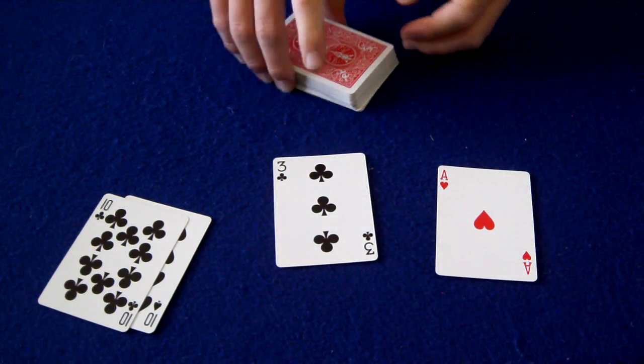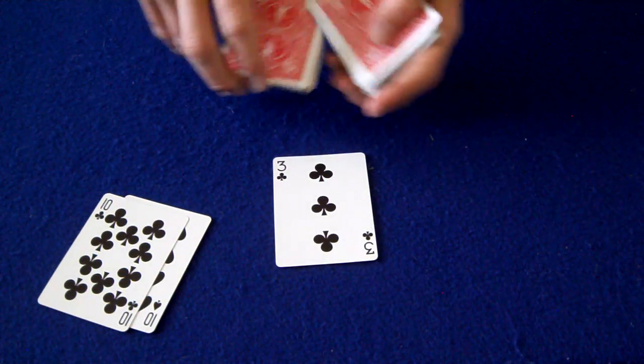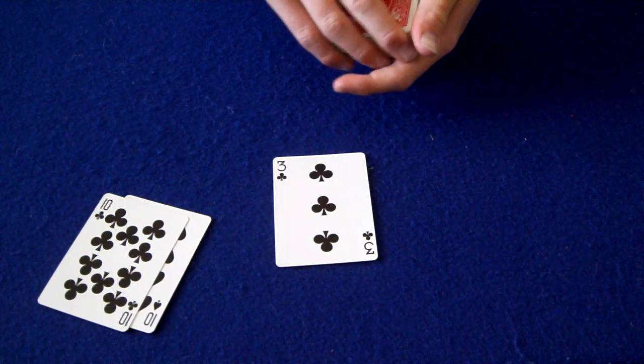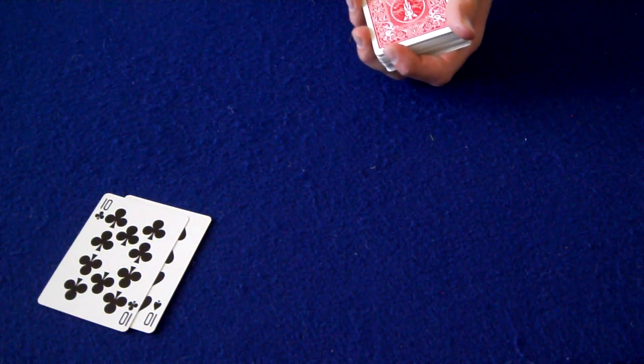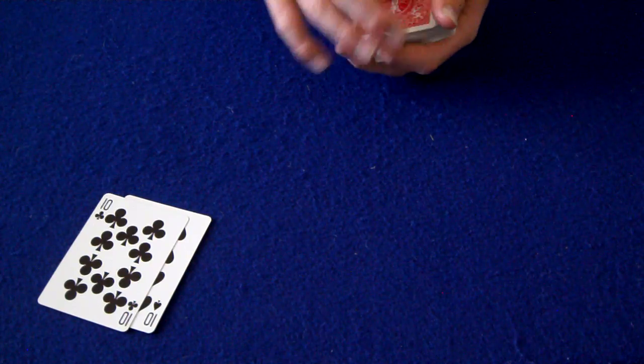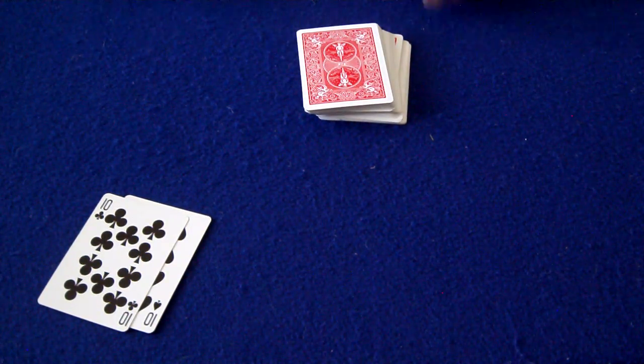So we're going to take the first card and just get it lost into the deck, just like that. Get it lost into the deck. And we're going to take the Three of Clubs and just place it in the center of the deck, just like that, and then just cut the deck a couple of times.